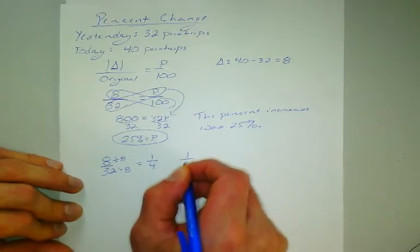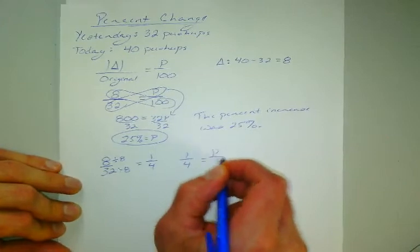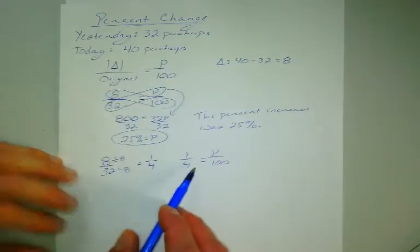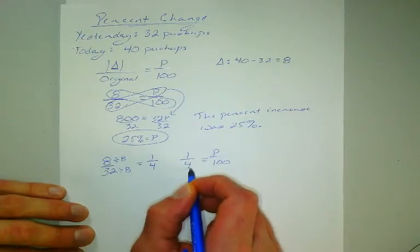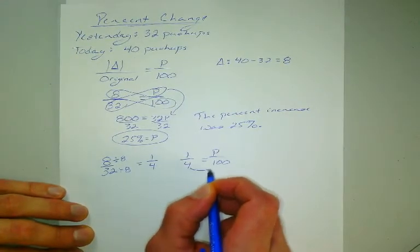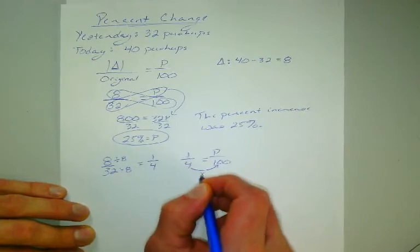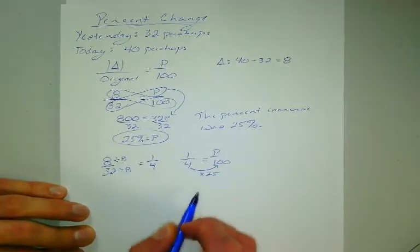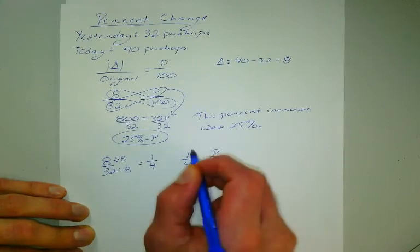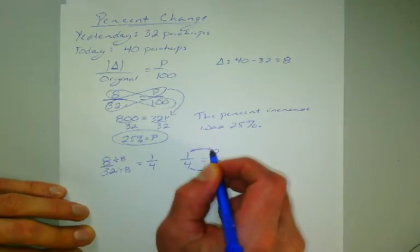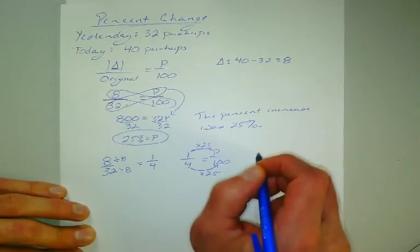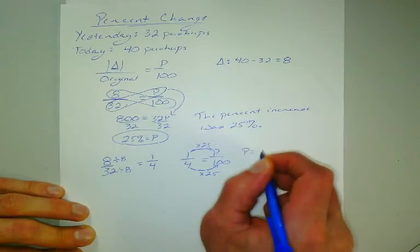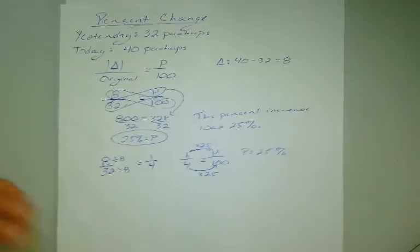So I have 1 fourth equals p over 100. And again we could cross multiply. My projector is getting a little shaky here. Now what can we multiply 4 by to get to 100? 25. So 4 times 25 gives us 100. Now if it's proportional you're going to multiply the top number by the same scale factor or constant of proportionality, times 25. 1 times 25 gives us 25. So p equals 25 percent. So we get the same answer doing it two different ways.